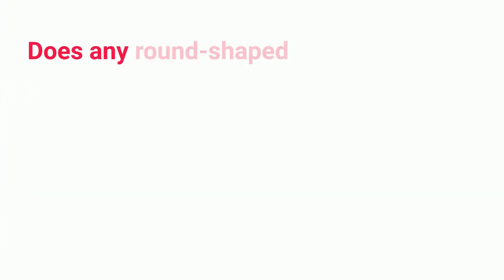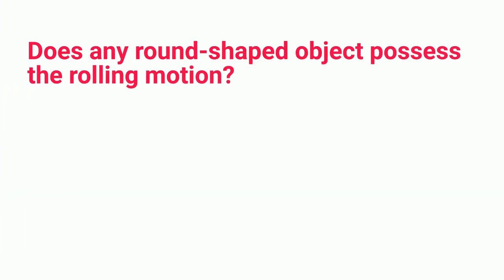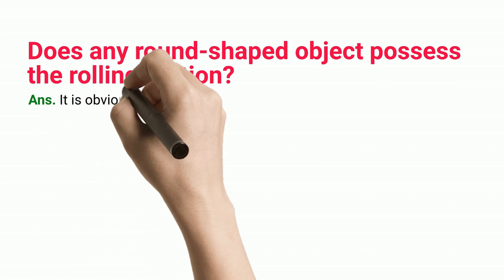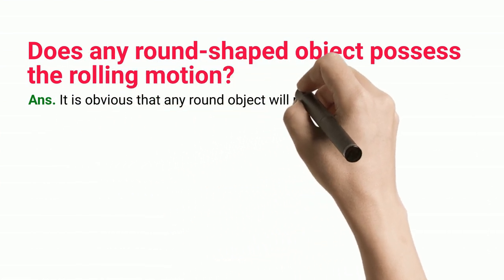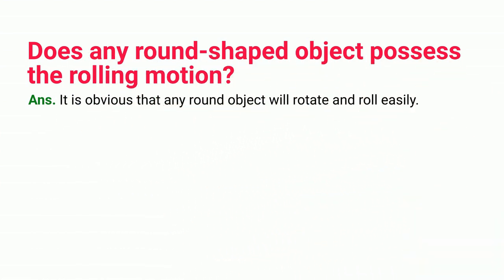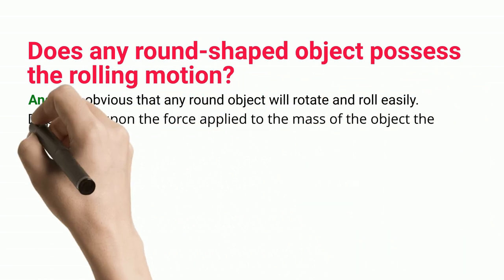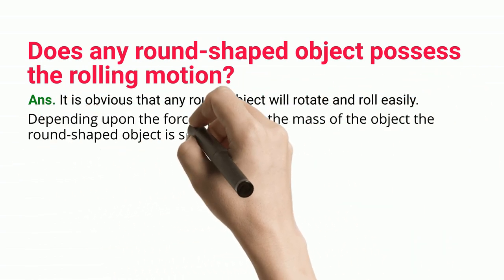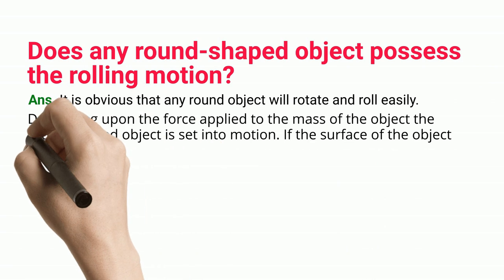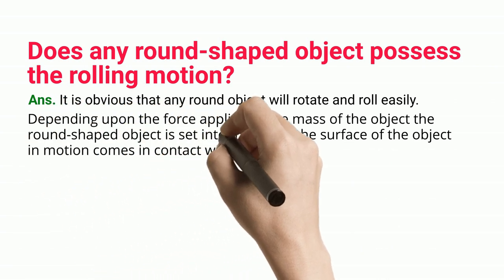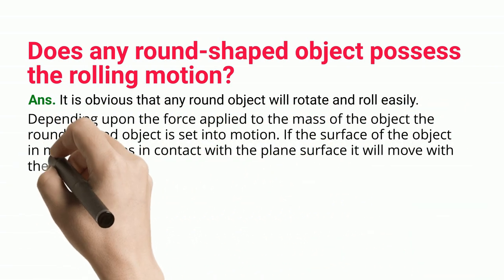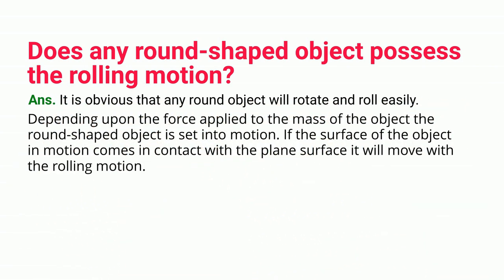Does any round-shaped object possess rolling motion? It is obvious that any round object will rotate and roll easily. Depending upon the force applied relative to the mass of the object, the round-shaped object is set into motion. If the surface of the object in motion comes in contact with a plane surface, it will move with rolling motion.